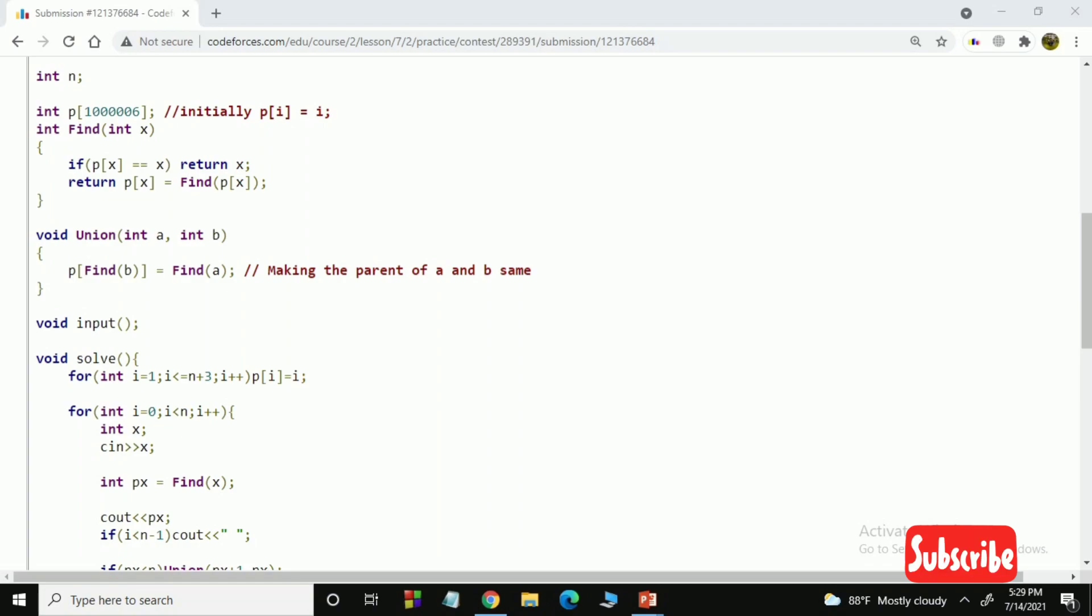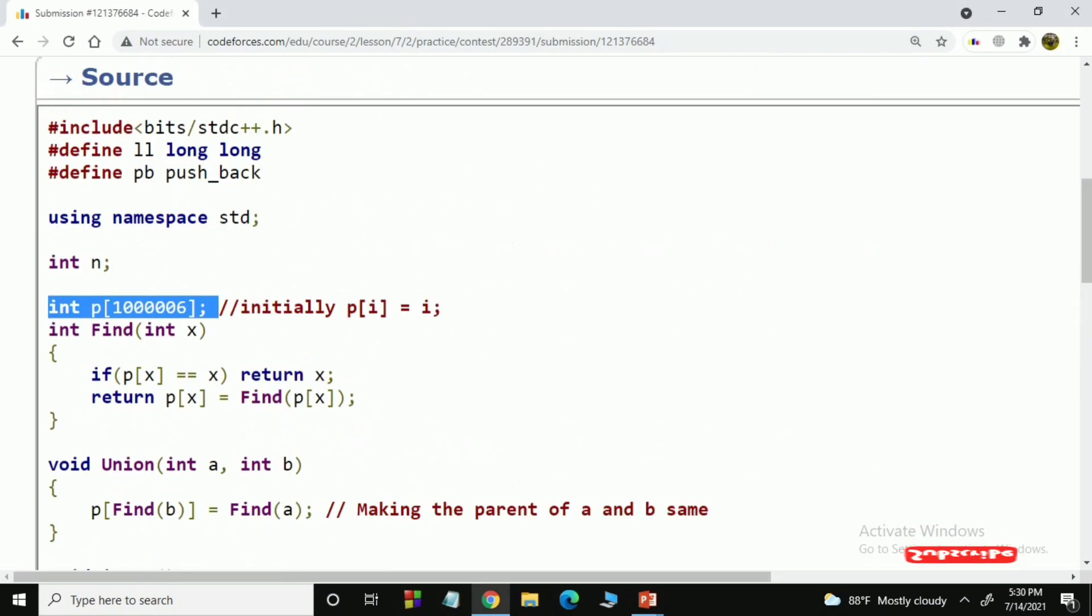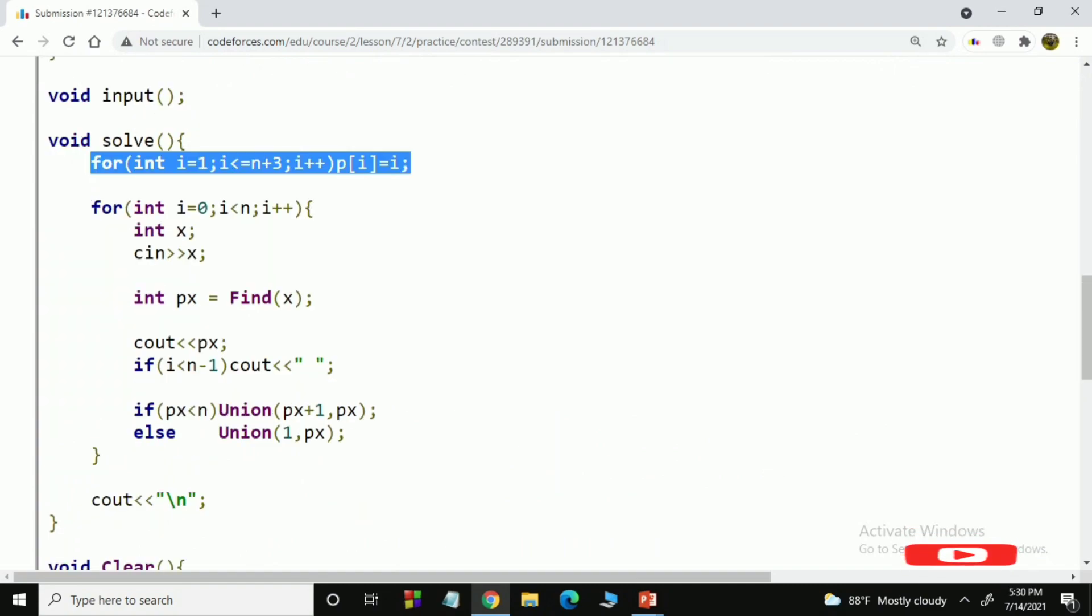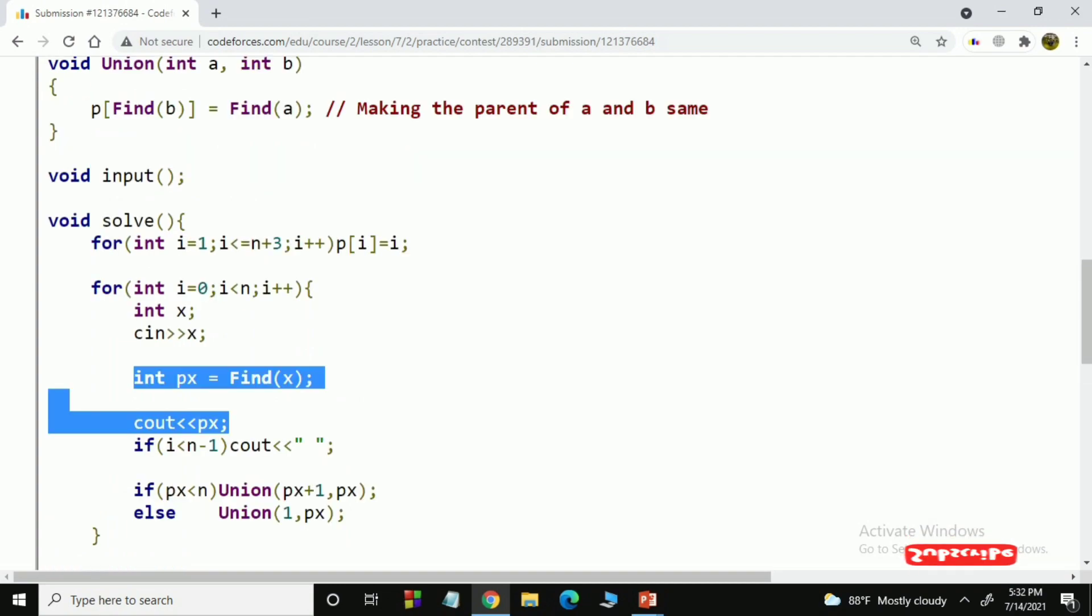Let's try to solve this problem using disjoint sets union data structure. We will keep parents for each position in an array p. Pi will denote the next position from i which is empty. Initially, all pi will be equal to i as all the positions are empty.